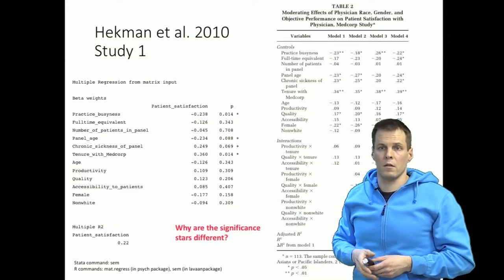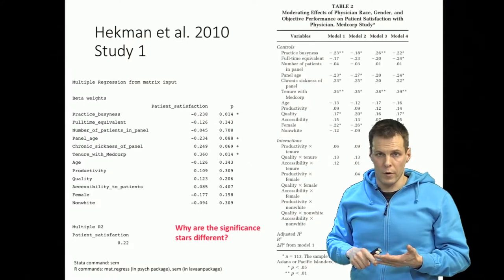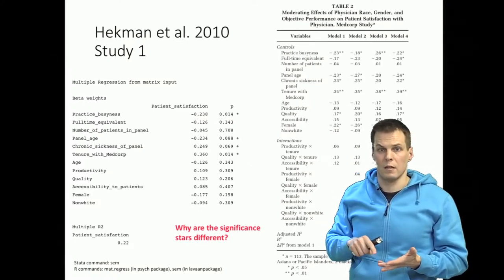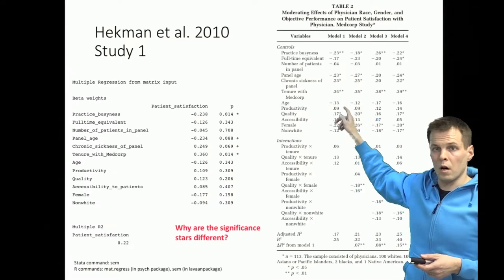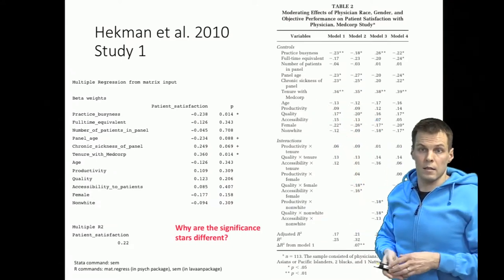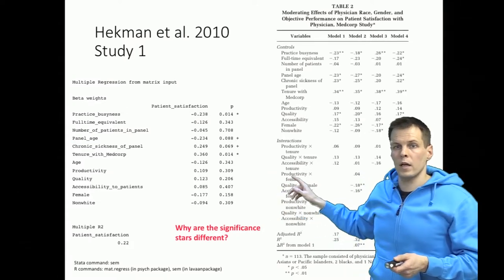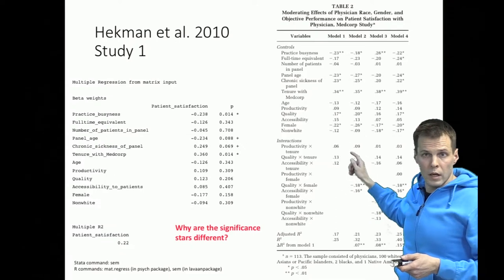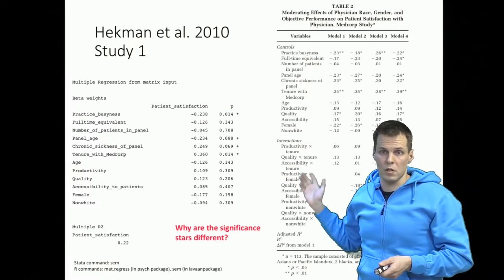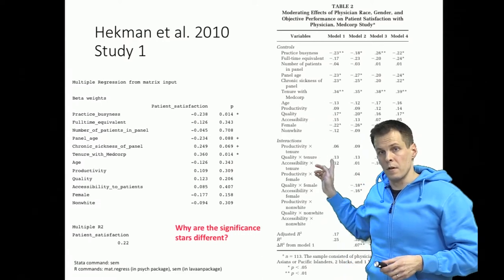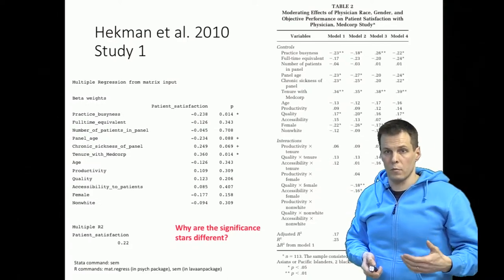To understand why our p-values differ from Heckman's, remember that the p-value is defined by the standard error, the estimate, and the reference distribution against which we compare the t-statistic — the ratio of the estimate to the standard error. The estimates here are about the same, so what could be different is the standard errors. Somehow we may be calculating standard errors differently — for example, because we don't include certain variables in the model.